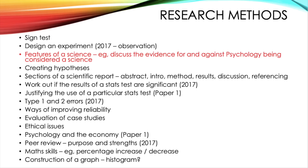What do I think could come up in the 2019 paper? You've got your sign test, which is the only statistical test you need to know how to conduct. You may also have to design an experiment — in 2017 there was a question on designing an observation, but this time you may need to design an experiment. You've also got the features of a science, so a question could come up where you have to discuss evidence for and against psychology being considered a science. I think this one is quite likely as we haven't seen it before.